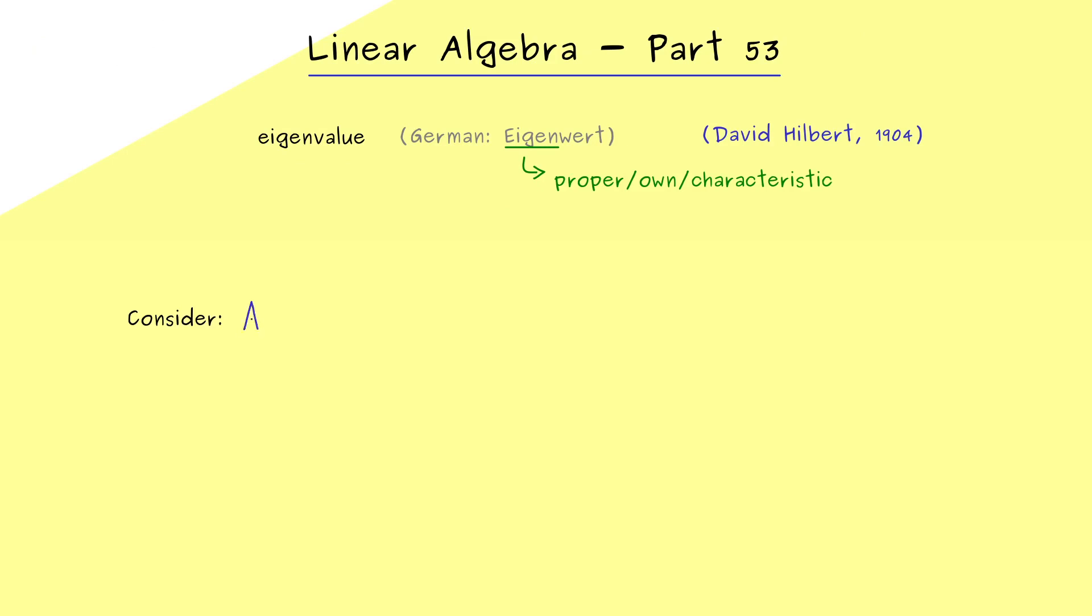Namely, we have to consider a square matrix A. So in general, we have an n times n matrix, and we already know this corresponds to a linear map. As usual, we call this f_A and it maps R^n into R^n. Hence, when we talk about Eigenvalues, we also talk about linear transformations.